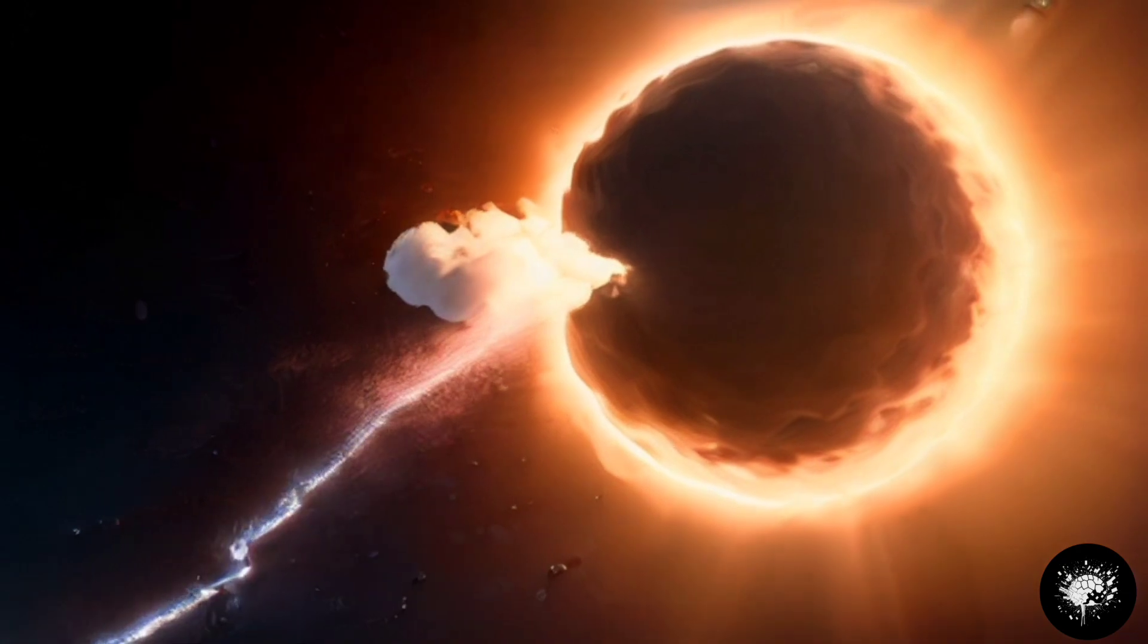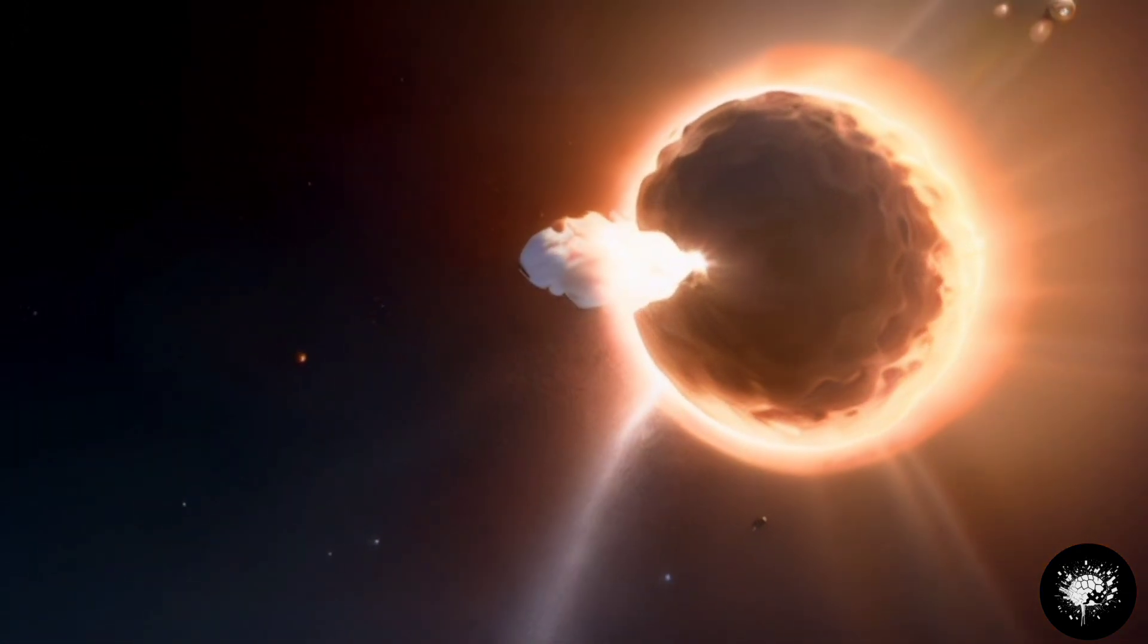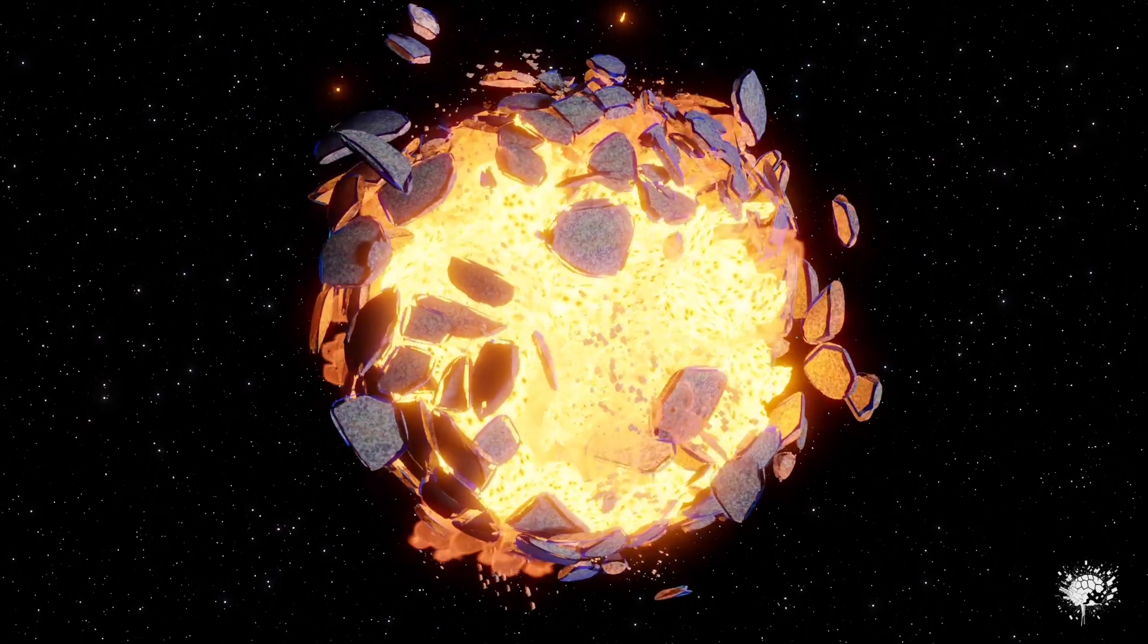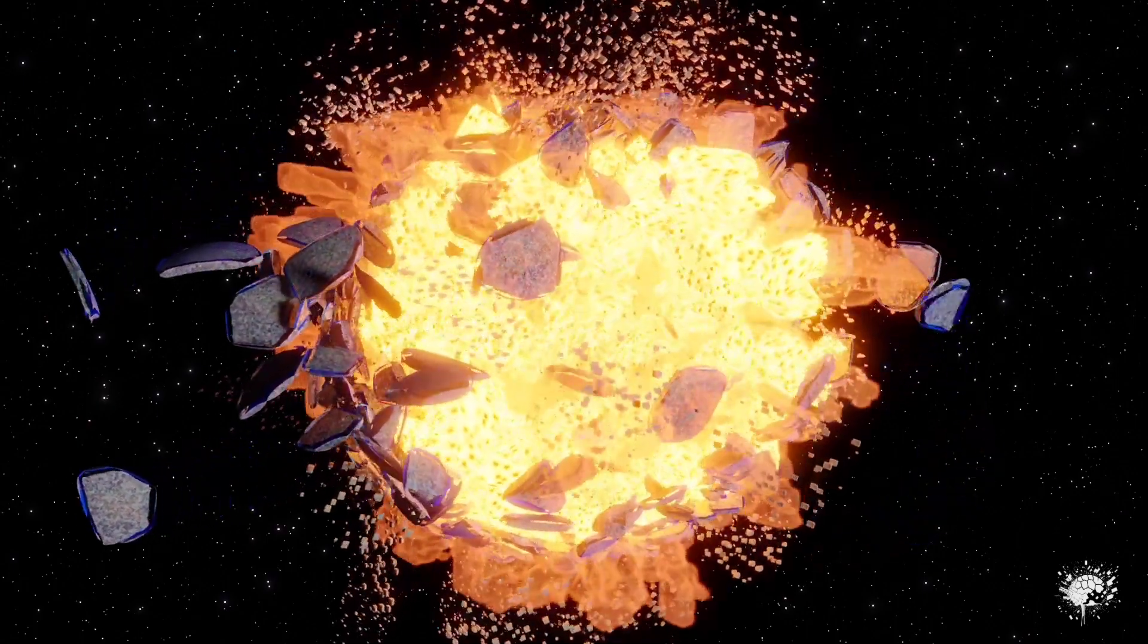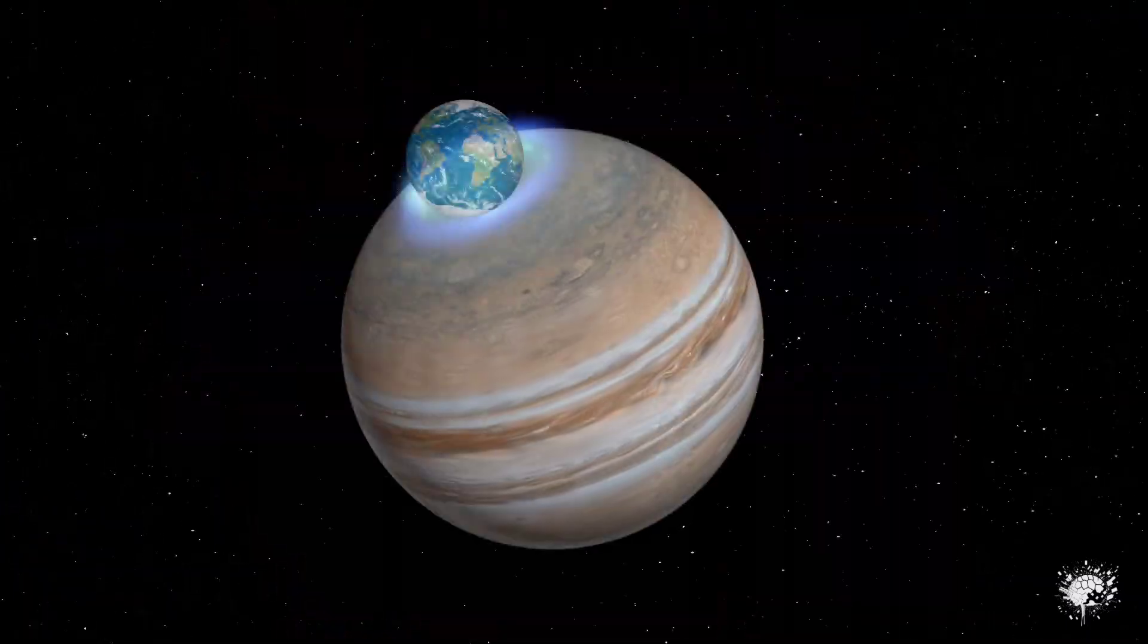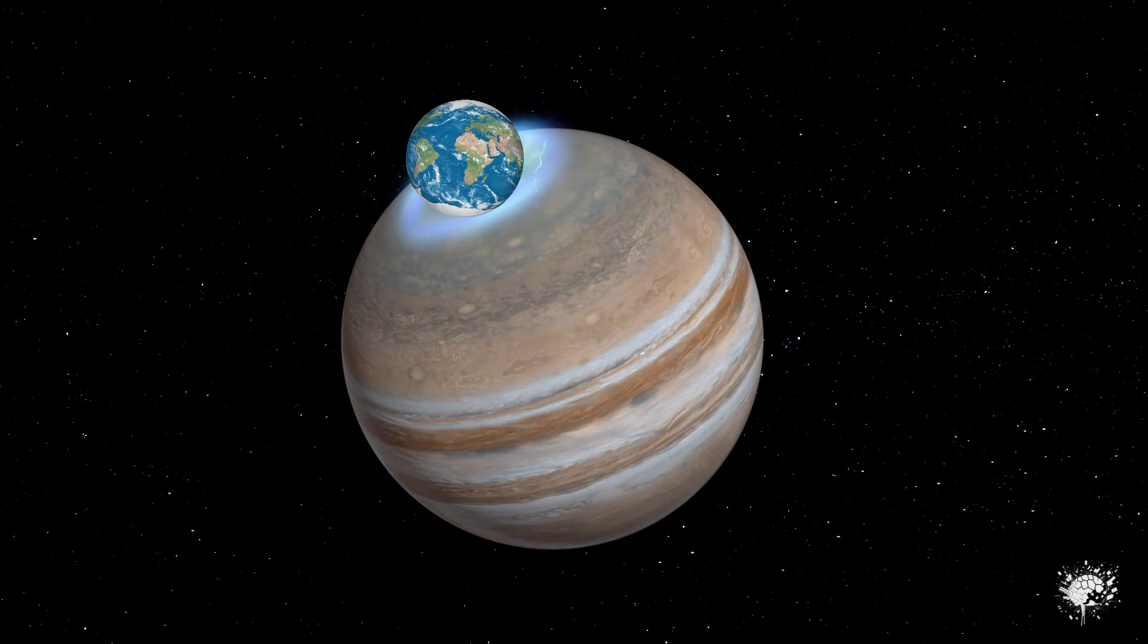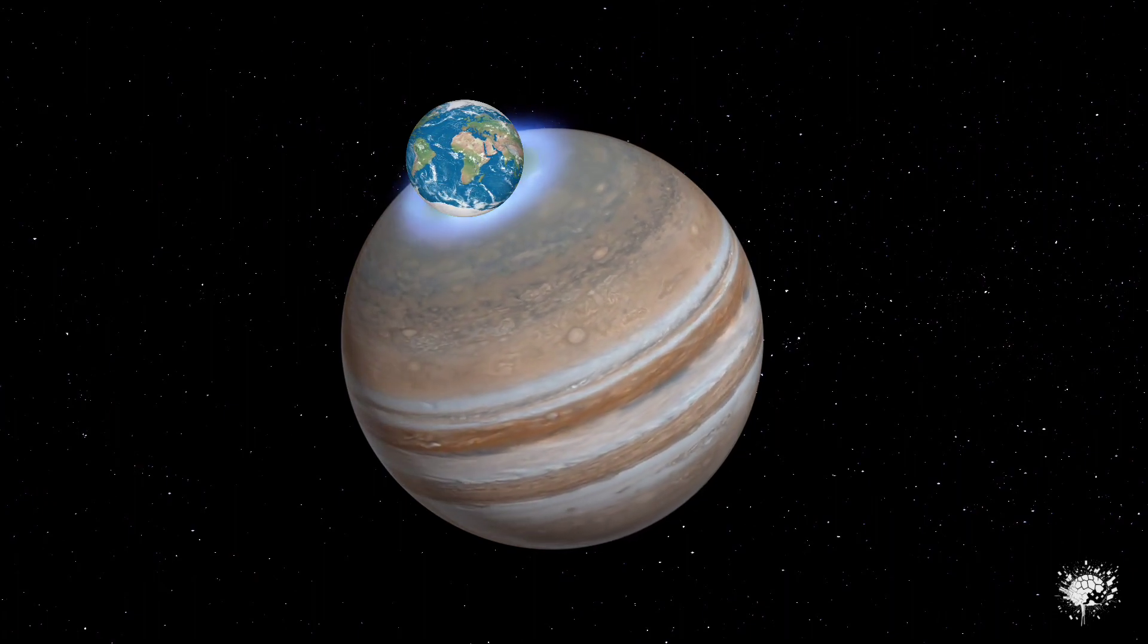As the Earth collides with Jupiter, the atmospheres of both planets would compress, leading to a dramatic increase in temperature, igniting everything. The Earth, being comparatively small compared to Jupiter, would be destroyed in Jupiter's atmosphere before even reaching its core.